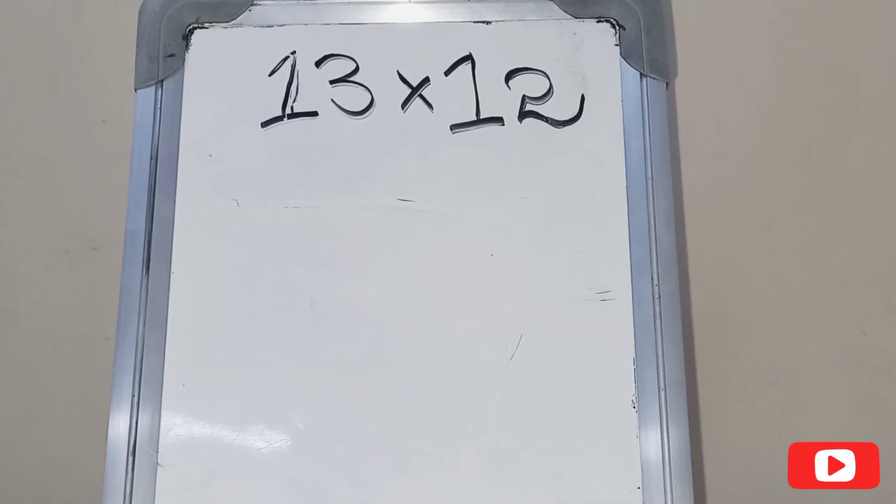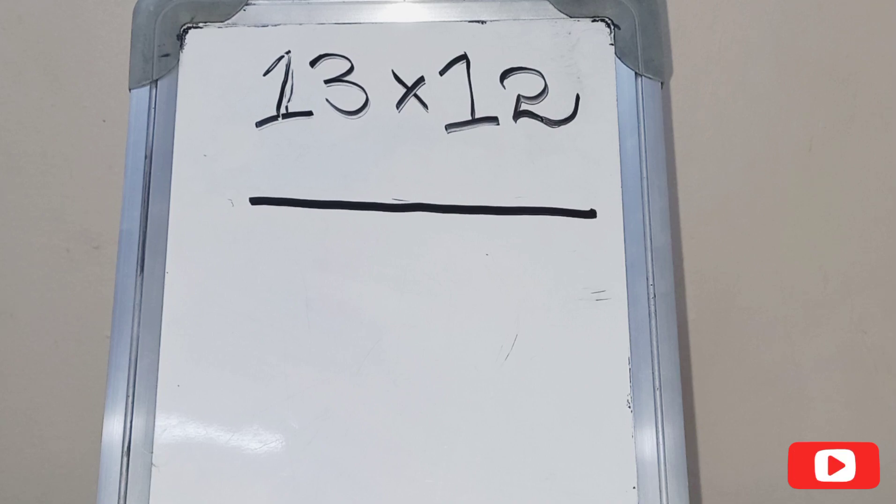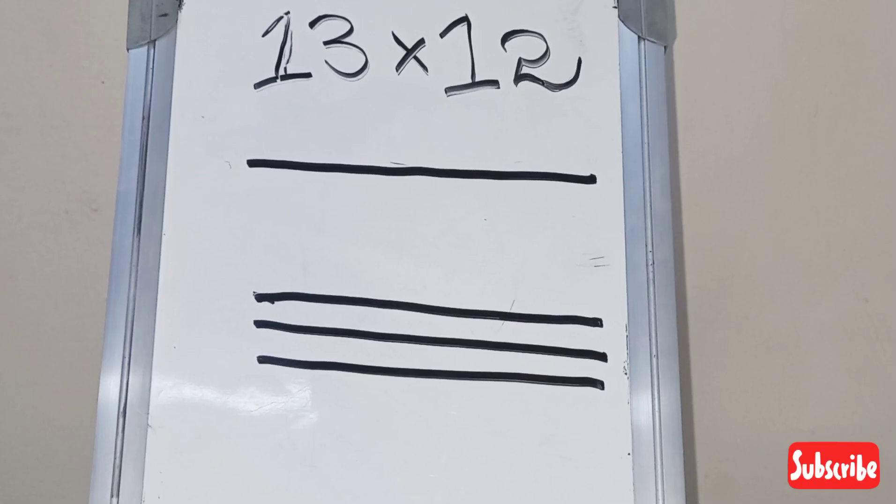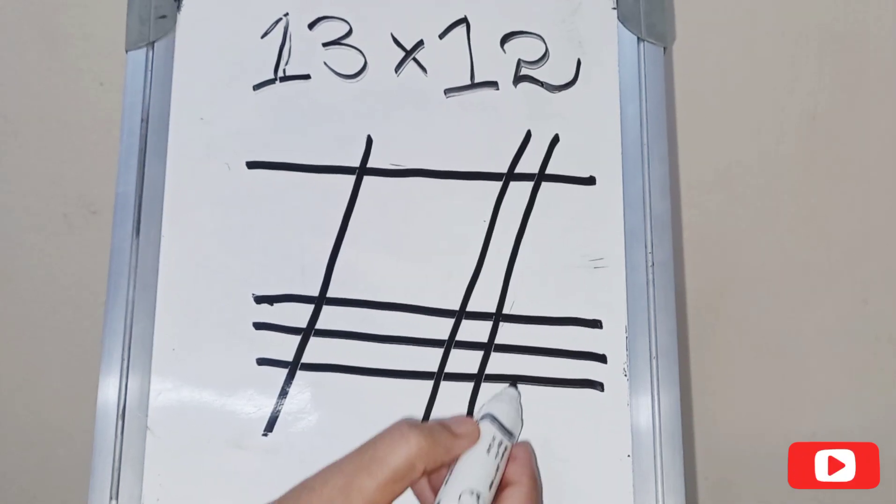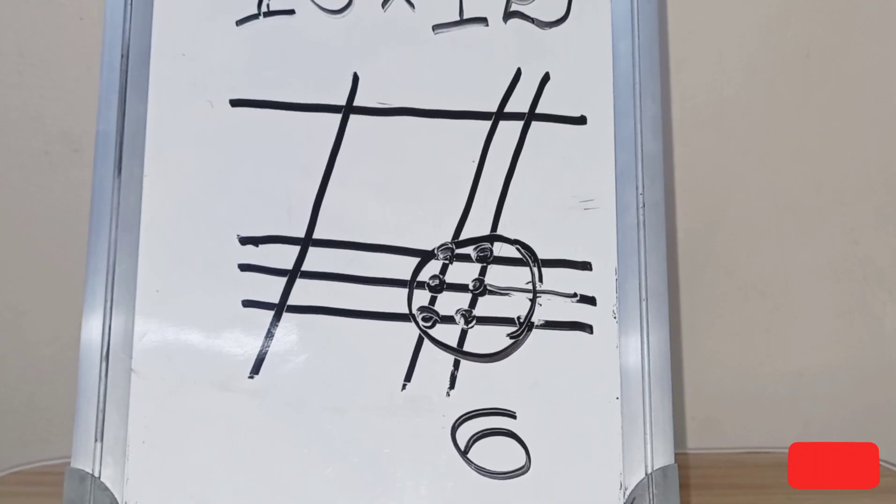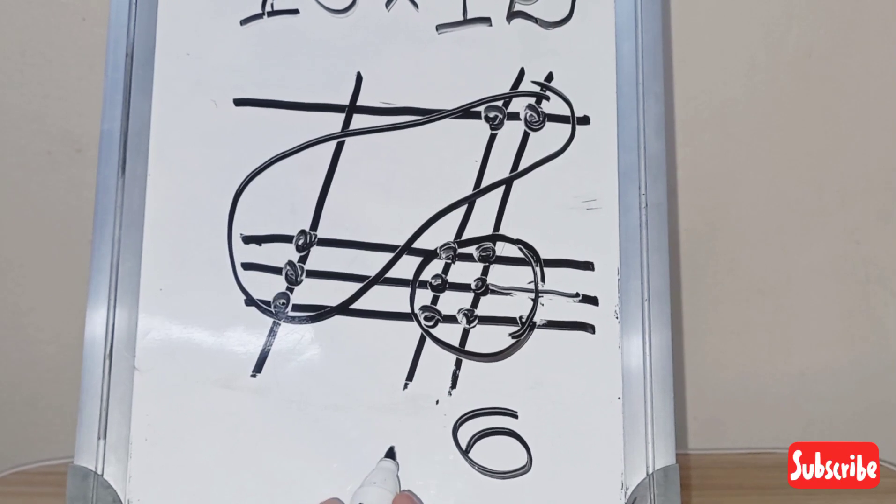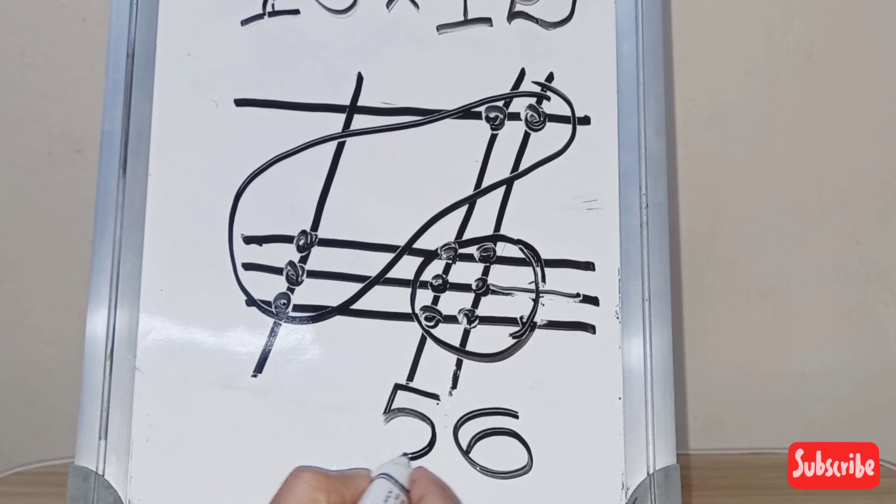First, draw one line. Then leave space and draw three lines down. Now draw one line slanting. Then draw two lines slanting. Circle here and count the points. Totally there are six points. Now count diagonally. Totally five points are there.